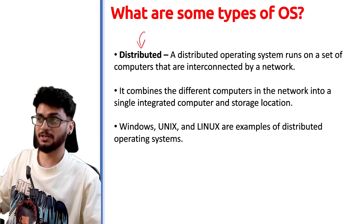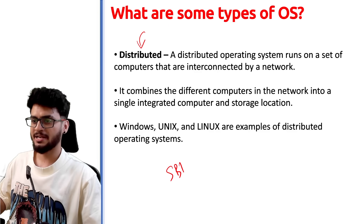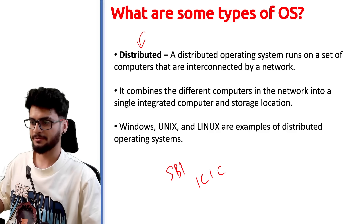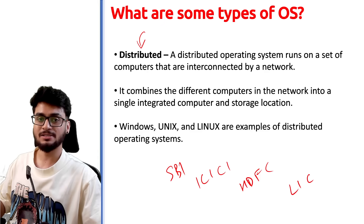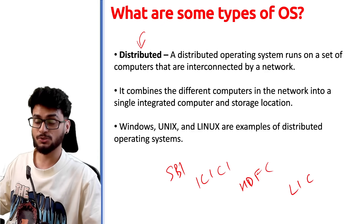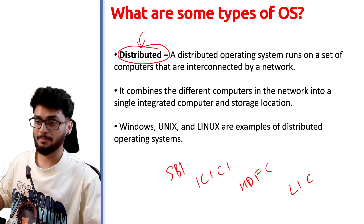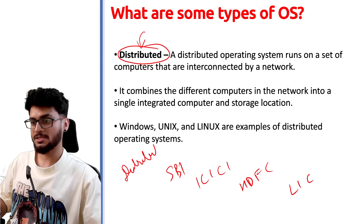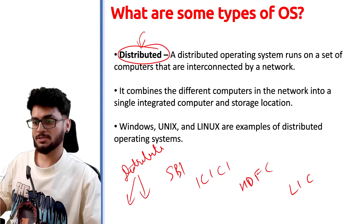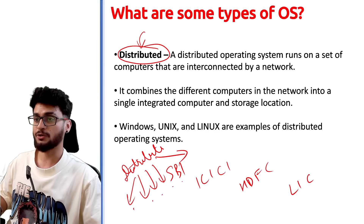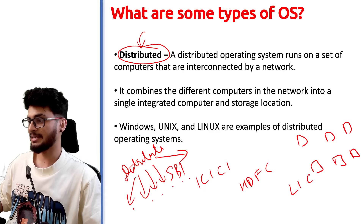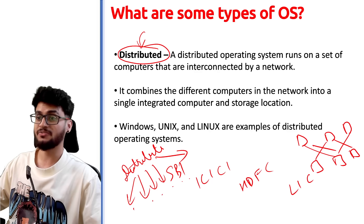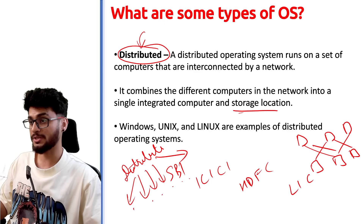Next is the Distributed Operating System. Large companies like SBI, ICICI, HDFC, and LIC do not use single-user OS — they use distributed OS. With a distributed OS, multiple users can work at the same time; the connected computers share one operating system, can share files with each other, and can also use the same storage location.